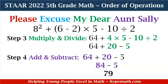Now we can add and subtract. Remember, it's in order from left to right, and that's very important. If you have multiplication or division, you don't do all multiplication first and then all division — you look from left to right in your expression. So we have 64 + 20 = 84, and then 84 − 5 = 79. So our expression, 8² + (6 − 2) × 5 − 10 ÷ 2, is equal to 79.